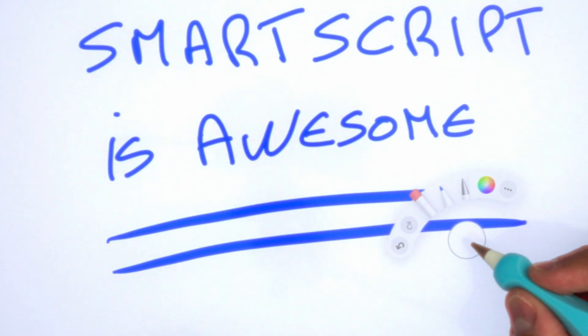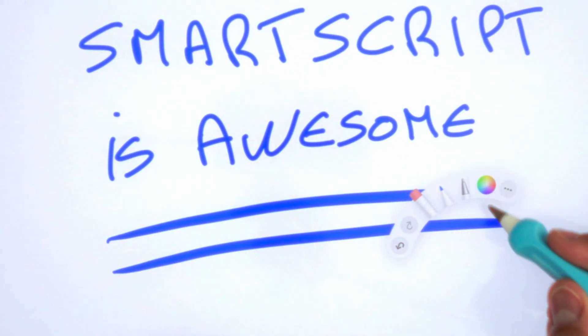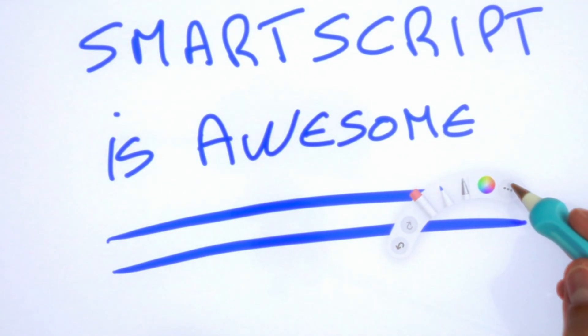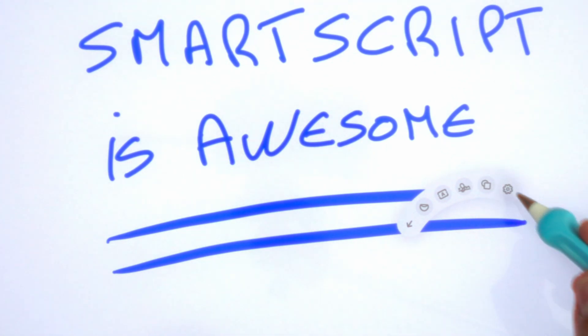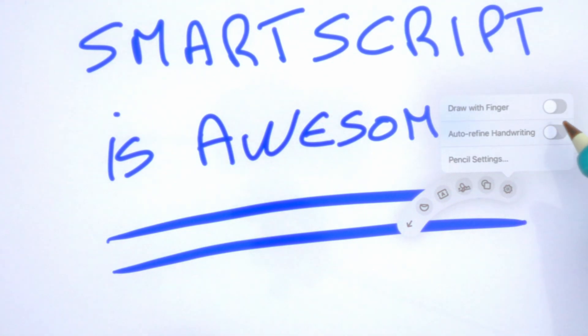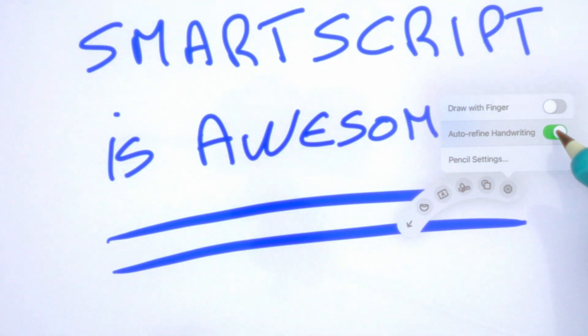To activate it, just open your toolbar, tap the three dot menu, and you will get an option to enable automatically refining your handwriting.